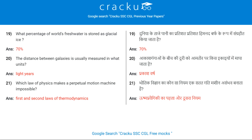The distance between galaxies is usually measured in light years. Which law of physics makes a perpetual motion machine impossible? The first and second laws of thermodynamics.